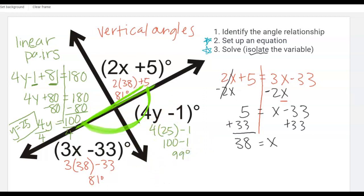So because I said these two angles here, this one and this one, equal 180 together, then 81 plus 99 should also equal 180, which they do indeed equal 180.